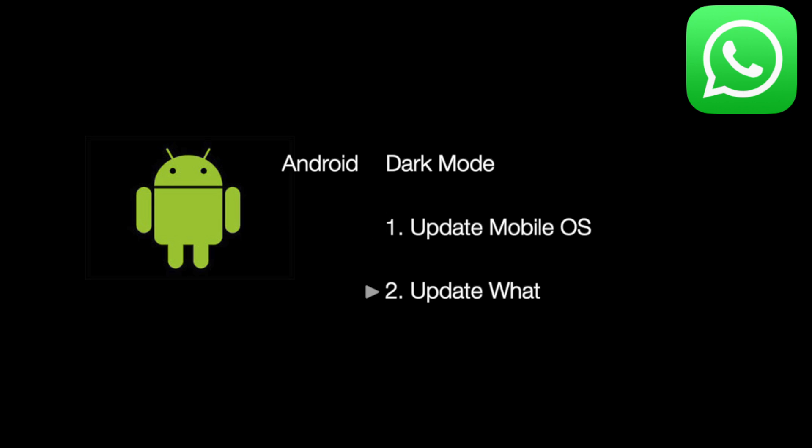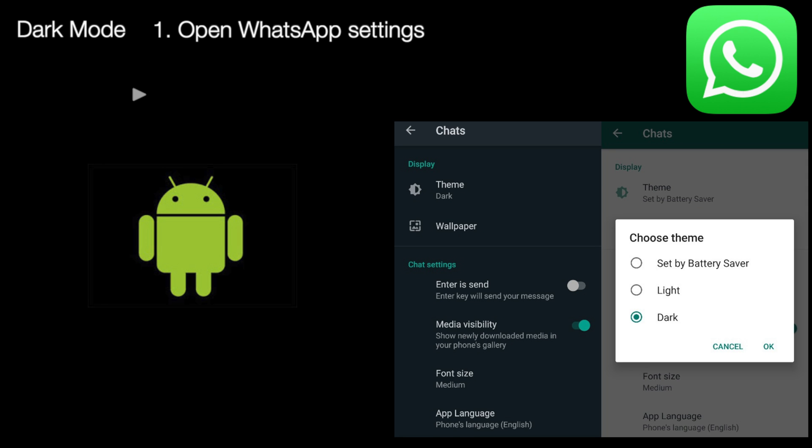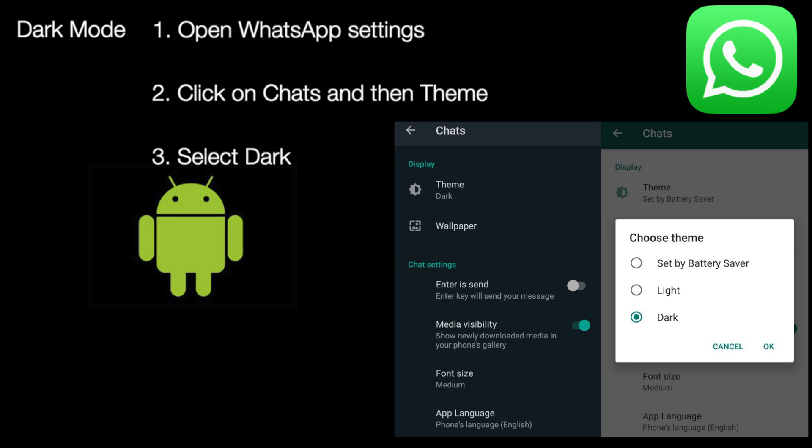To enable Dark Mode on your Android devices, you need to do two things: number one, update your mobile OS; number two, update the WhatsApp app. Once updated, open WhatsApp Settings, go to the Chats section, click on Theme, and select Dark Mode. This should enable Dark Mode on your WhatsApp.